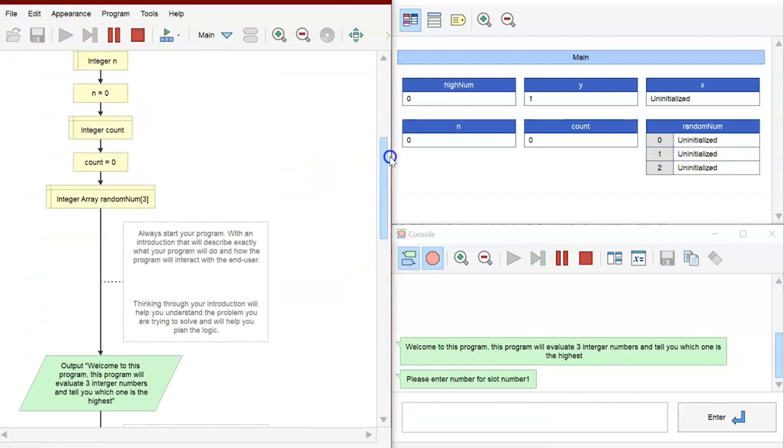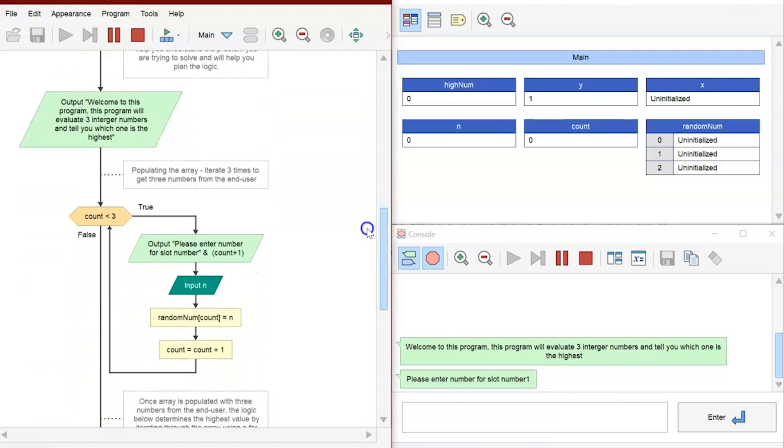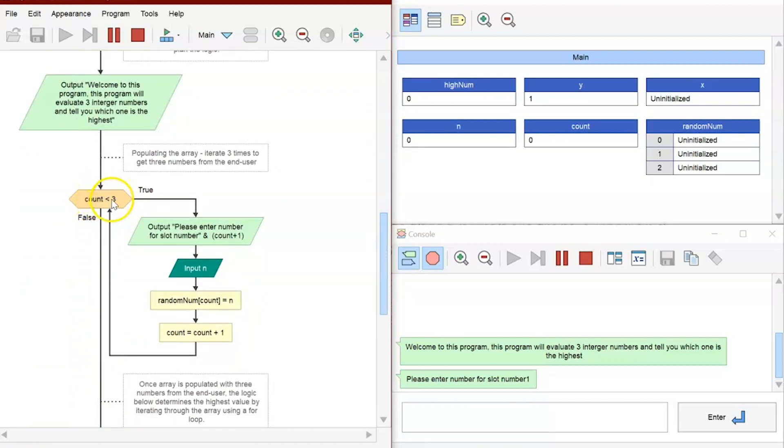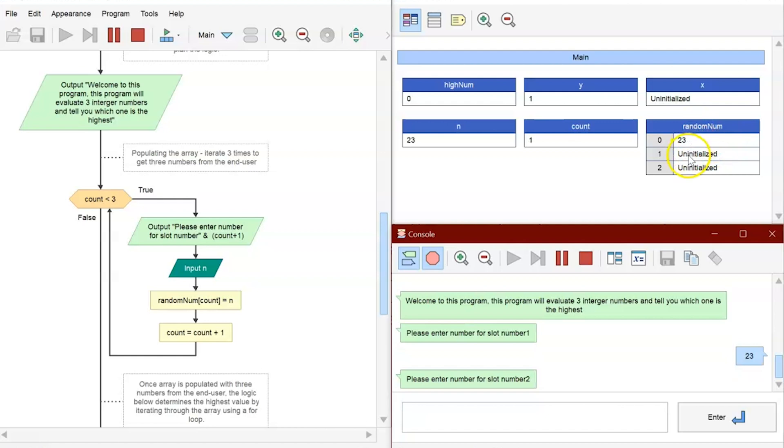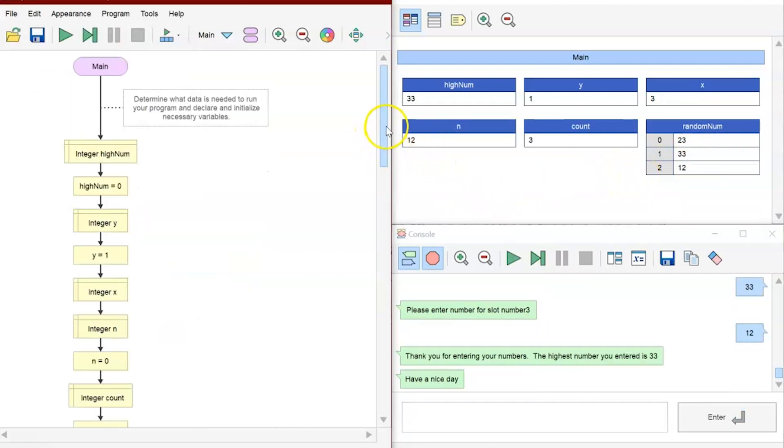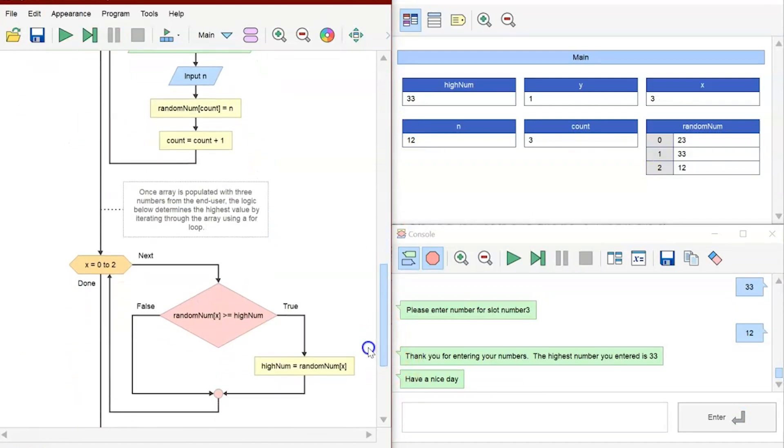You'll see that as we step through, it basically declared our variables, initialized our variables. It did our output statement. And then we go into our looping structure while count is less than three. Here we have sequence, sequence, sequence, sequence. And so you'll see that the variables are initialized and we can go ahead and put a number for the first number in our random number array. We can do our second number and we can do 12. So this program executes and goes all the way through, all the way to the bottom here. But you can see the various structures and how the program operates.